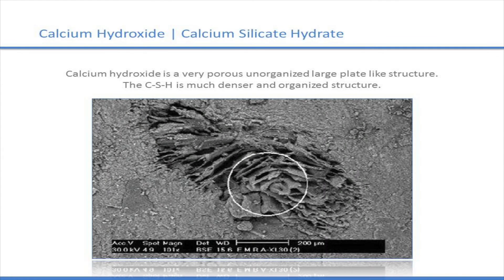Here's an even smaller look. The big flaky middle clump is calcium hydroxide — very porous, very loose-leafed, very disorganized structure, and very soluble. The background around that is the calcium silicate hydrate — much more organized, much harder, much denser.